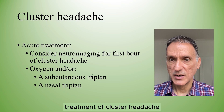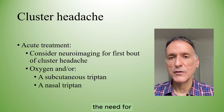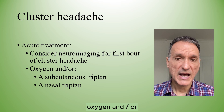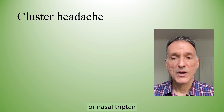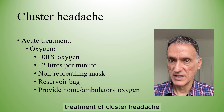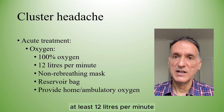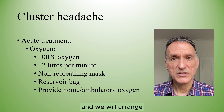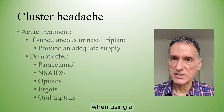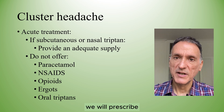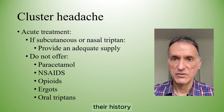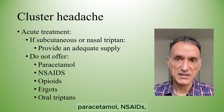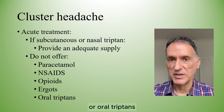For the acute treatment of cluster headache, we will discuss with specialists the need for neuroimaging for people with the first bout of cluster headache, and we will then offer oxygen and/or a subcutaneous or nasal triptan. When using oxygen, we will use 100% oxygen at a flow rate of at least 12 litres per minute with a non-rebreathing mask and a reservoir bag, and we will arrange provision of home and ambulatory oxygen. We will not offer paracetamol, NSAIDs, opioids, ergots or oral triptans for cluster headache.